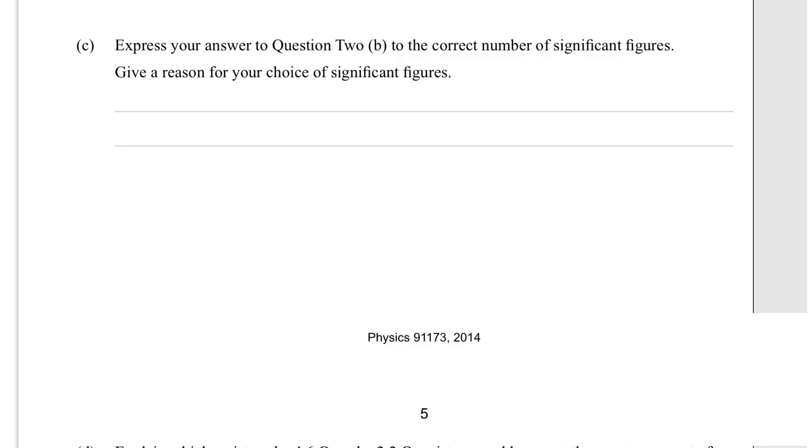It's nice that it's not just a standard approach, though - so you have to think about it a little bit. Express your answer to question 2B to the correct number of significant figures. Give a reason for your choice of significant figures. Now the rule: if you're adding or subtracting, you use the lowest DP (decimal places).